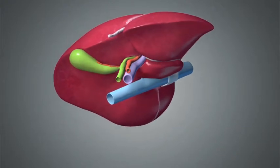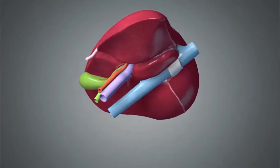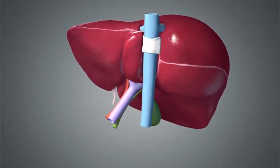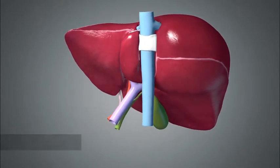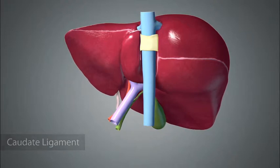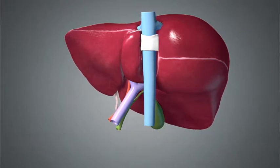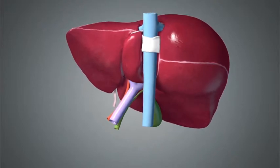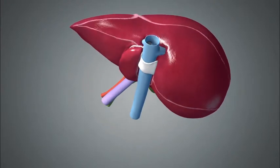There is a vascular ligamentous structure that encircles the IVC when the liver does not completely wrap around it. This is referred to as the caudate ligament or the caval ligament. From a surgical techniques point of view, this ligament is divided first in order to enable exposure and control of the right hepatic vein outside the liver.